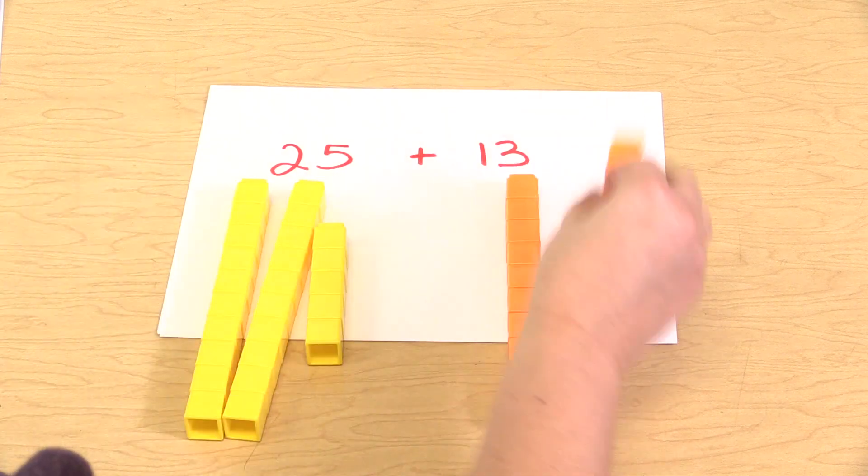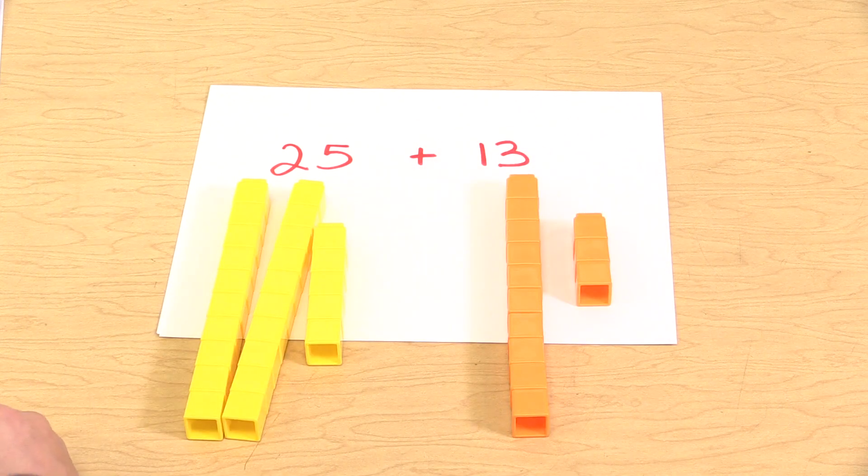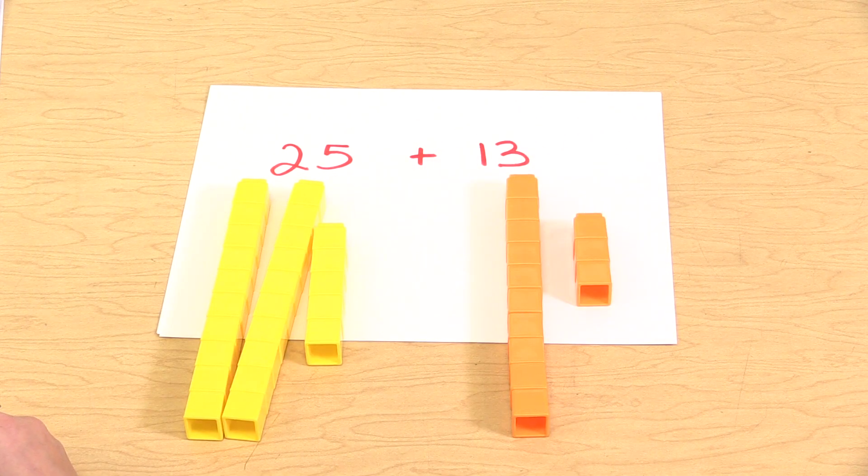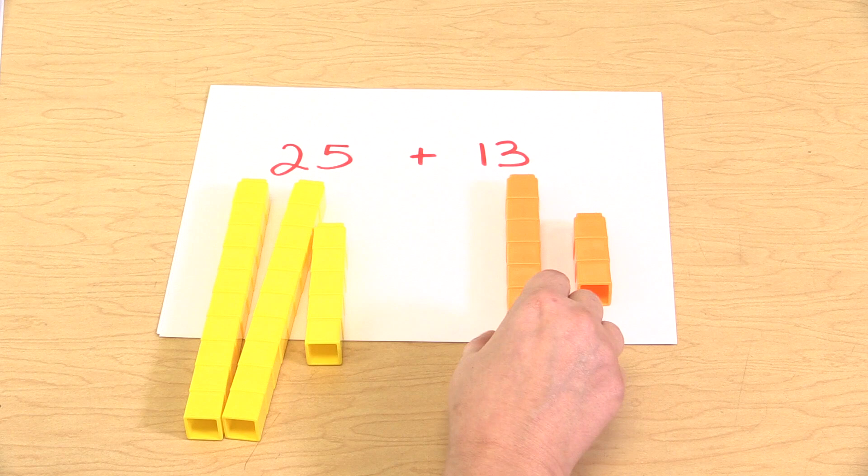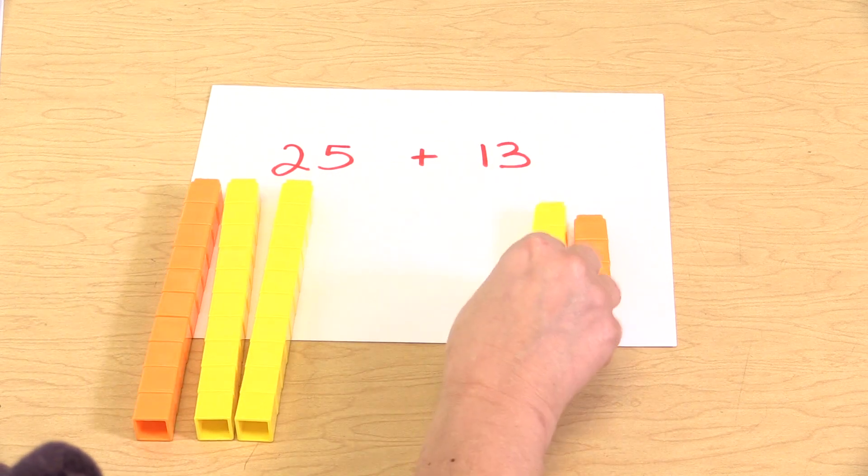And then a second set of cubes to make 13. The next step would be to have the students put together the tens and the ones.